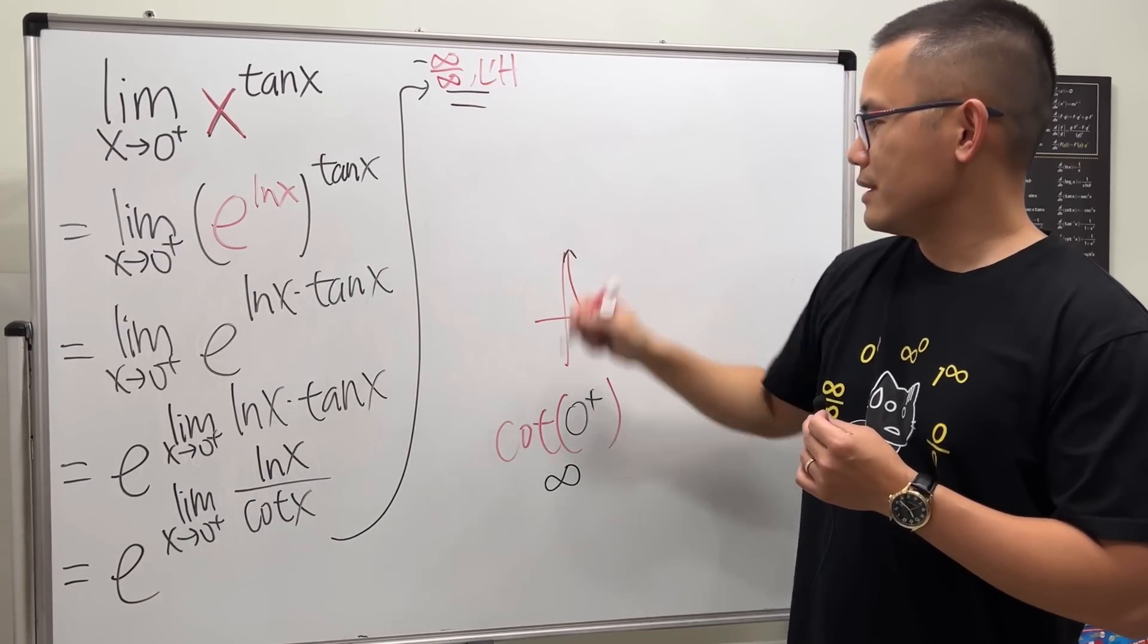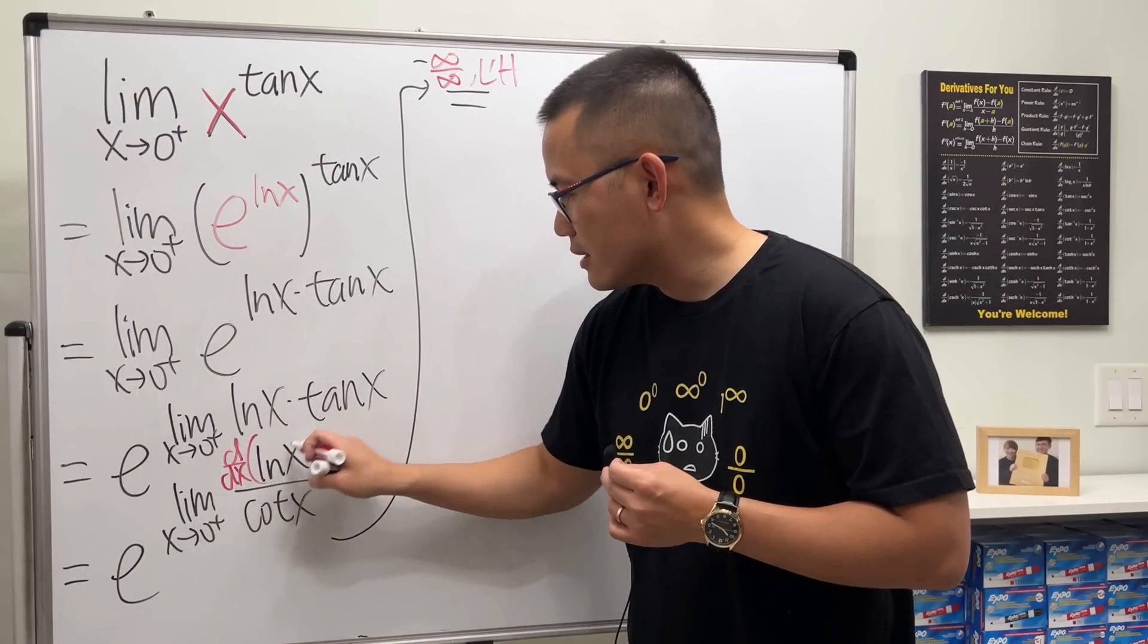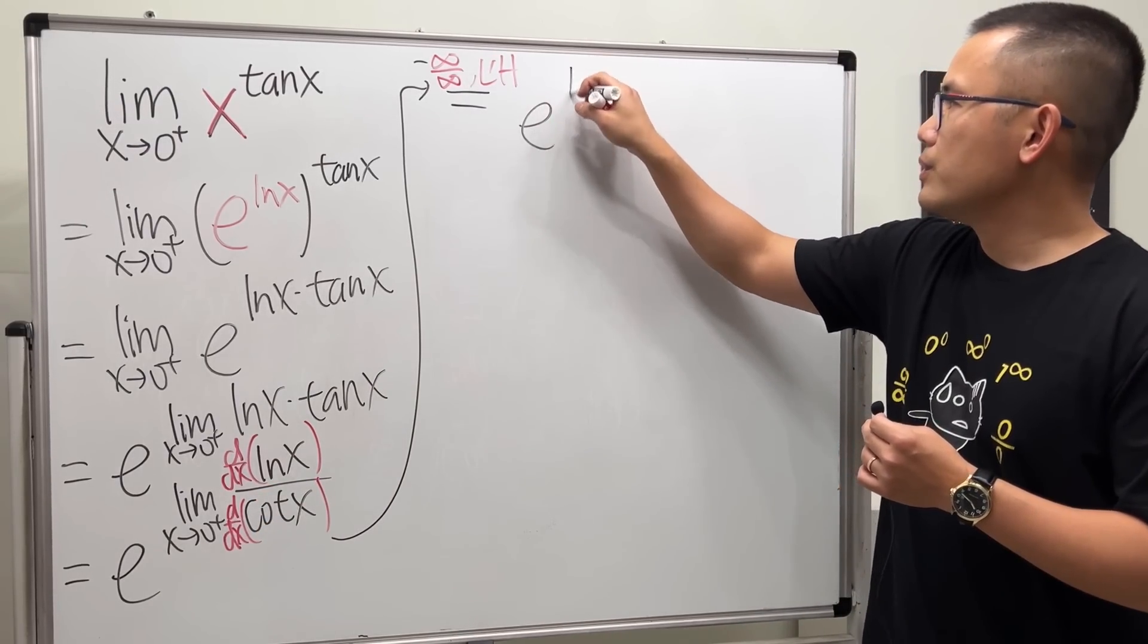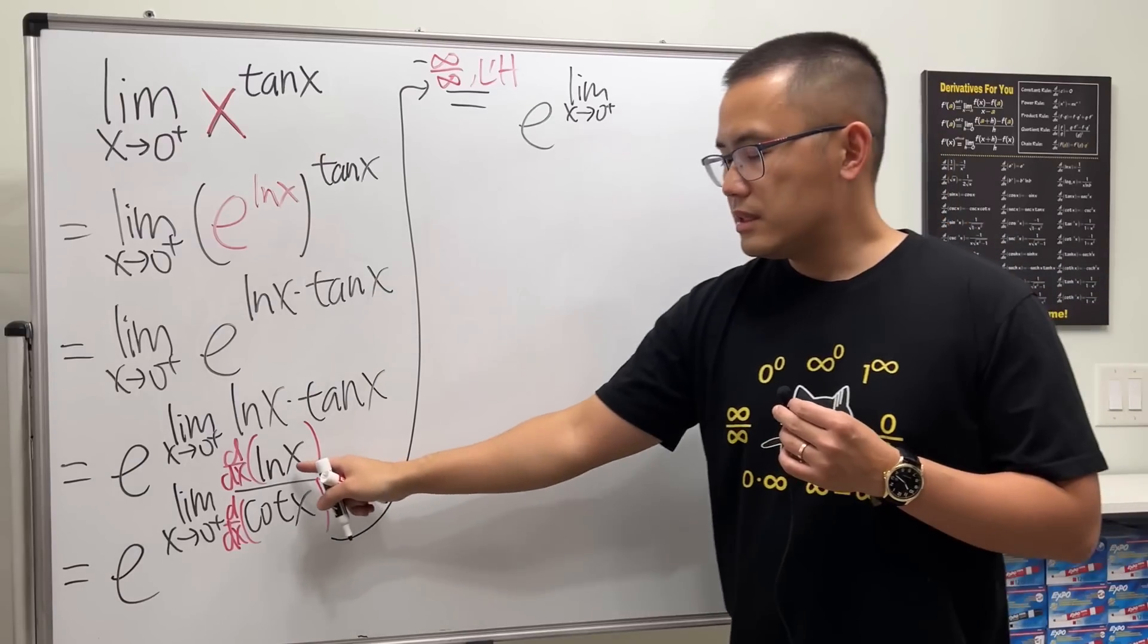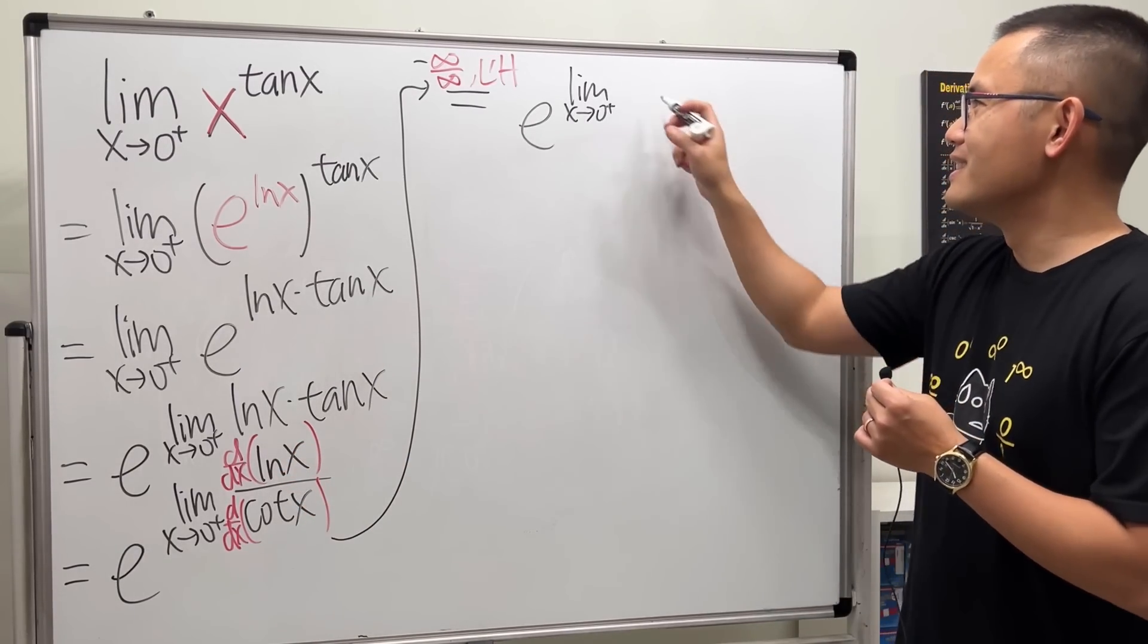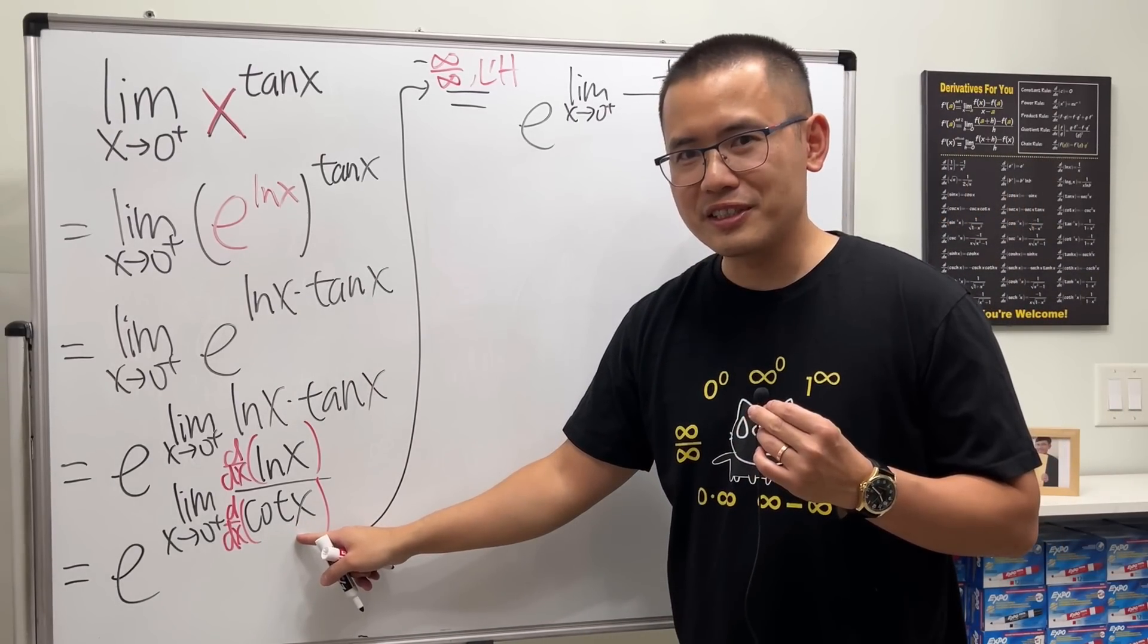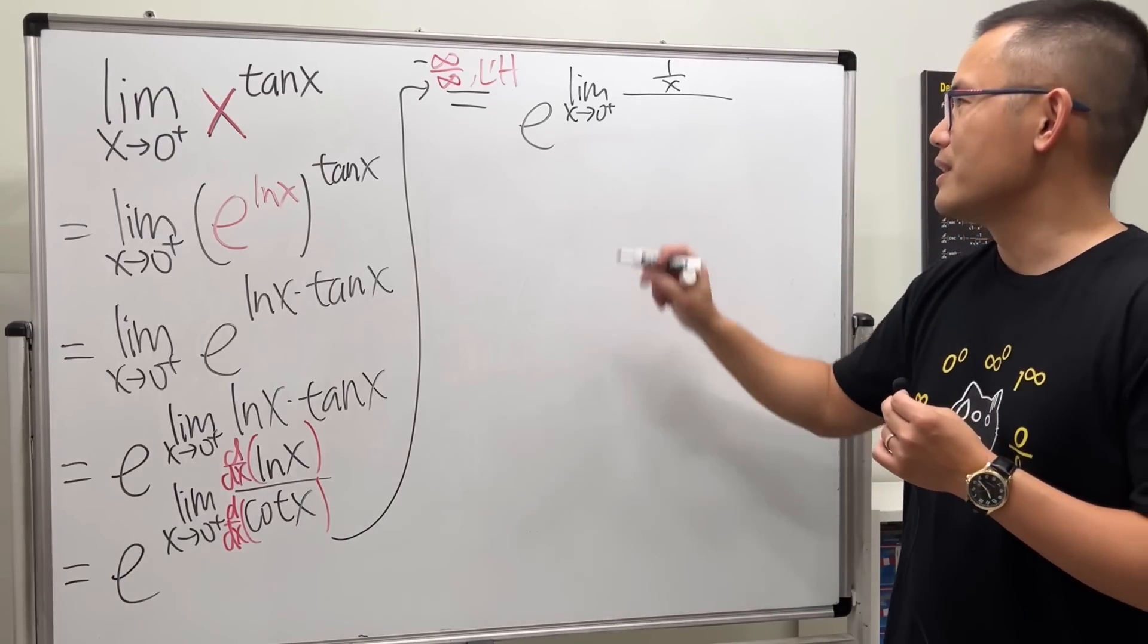We are going to look at this and take the derivative of it, look at this and take the derivative of it. So e to the limit as x approaching zero plus, the derivative of ln x, we have to know our derivatives, and remember it really well, it's one over x. Now what's the derivative of cotangent x? Negative cosecant squared x.